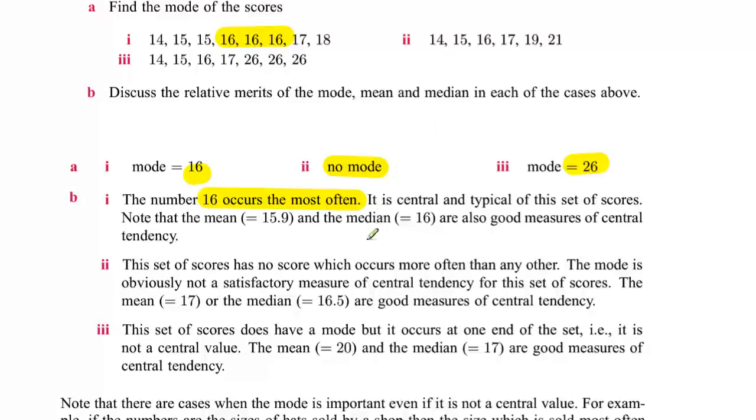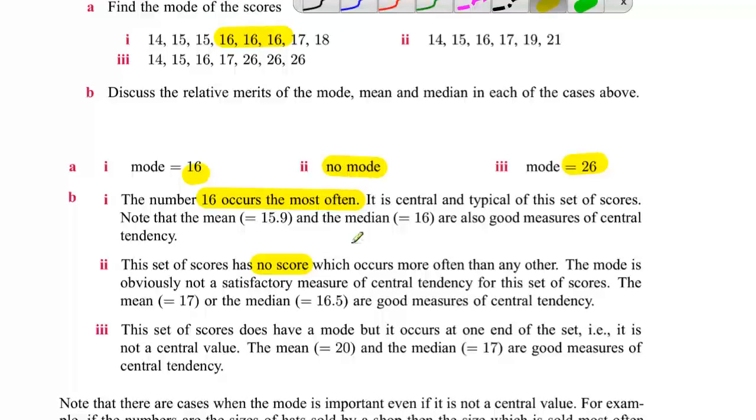What about in number two? It says that this set of scores has no score - oh I'm sorry, no score which occurs more often than any other. So that means there is no mode. So in this case the mode is not a satisfactory measure of central tendency because it simply doesn't exist. So it would be better to use the median which is 17, or sorry the mean which is 17, or the median which is 16.5.